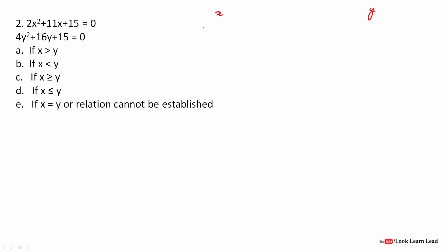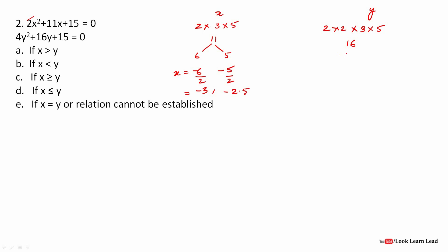Next, question two. I'll write x and y. For x: 2×2 for the coefficient, and for 15 I'll write 3×5. I need 11, so it's 6 and 5 — that gives +11, meaning +6 and +5. So the value of x would be -6 and -5. The first coefficient is 2, so -6/2 = -3 and -5/2 = -2.5.